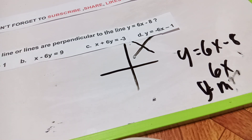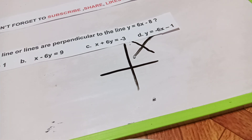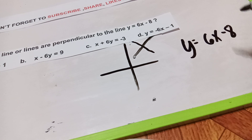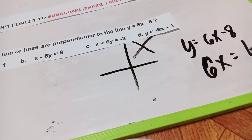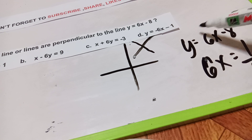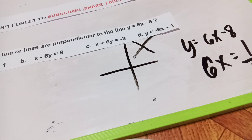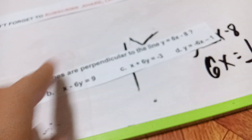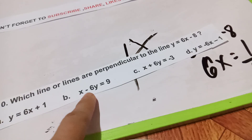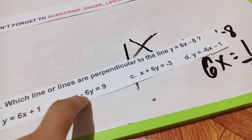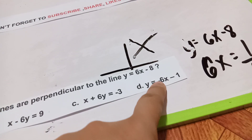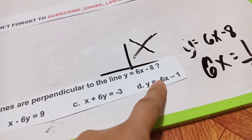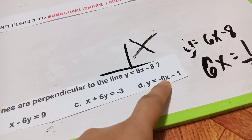The given is y = 6x minus 8. We know that the reciprocal of 6 is 1 over 6, and automatically we also apply a negative sign, making it negative 1/6x. Looking at the choices — y = 6x plus 1, x minus 6y, x = 6y equals 3, and y = negative 6x minus 1 — the answer is letter D.